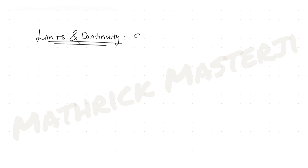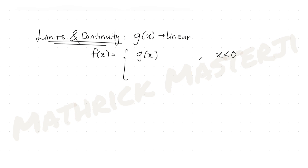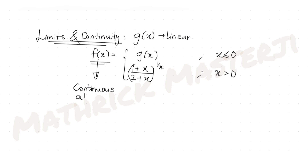The question tells us that g is a linear function and f equals g for values of x less than 0 and at x equals 0 as well. For values of x greater than 0, f is defined as (1 + x) / (2 + x) raised to 1/x. The function f is continuous at x = 0. We are also told that f'(1) equals f(-1).